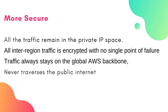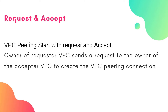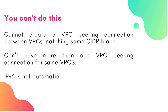The method of creating a VPC peering starts with a request and an accept. The possible connections include VPCs in two different accounts in different regions. The owner of the requester VPC sends a request to the owner of the acceptor VPC to create a VPC peering connection. If you are going to do this from the same account, then you are going to be both the requester and the acceptor. With VPC peering, you have to be careful about CIDR blocks because you cannot create a VPC peering connection between two VPCs with matching CIDR blocks.